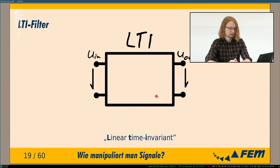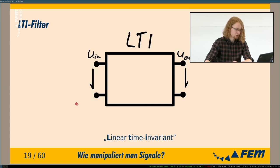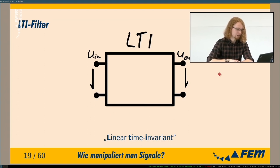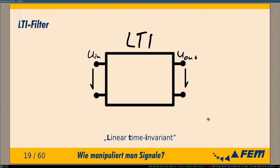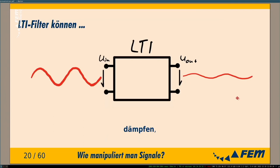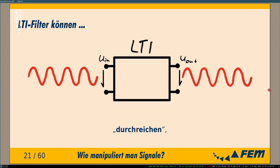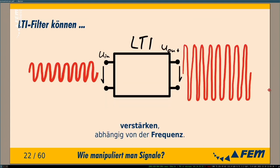This circuit is what we call an LTI filter — Linear Time Invariant. It takes an input signal U_in at two connections and outputs a manipulated value U_out. A signal going in can come out attenuated, at the same level, or amplified. Which sine waves get amplified and which don't depends on the frequency and the system.